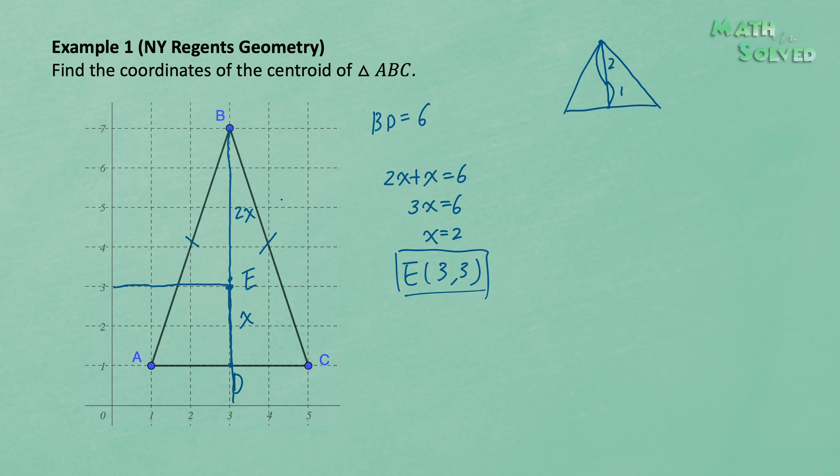But if you are given a more general triangle, actually there is a formula for us to find the coordinates of the centroid. Let's assume for any triangle, the three vertices have the coordinates x1, y1,